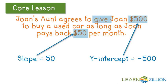It could have been interpreted as a positive y-intercept — Joan receives $500, she now has $500 positive, and she's going to pay back $50 per month. But I thought that was a little off, because she's buying the car, so she really doesn't have $500 anymore. So I interpreted the y-intercept as negative $500, and she's going to pay back positive $50 per month.